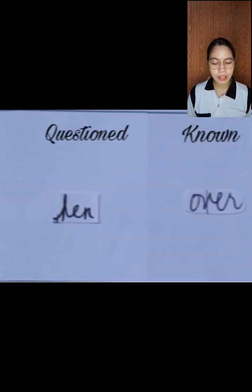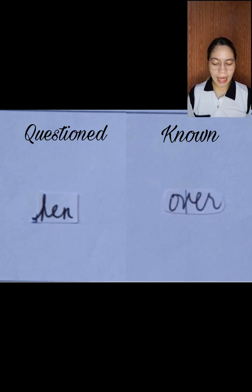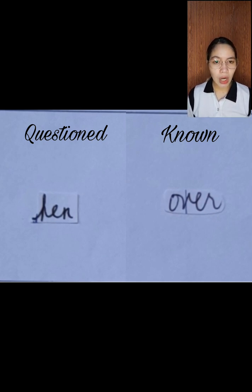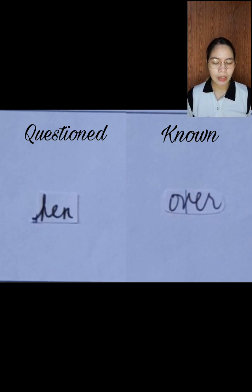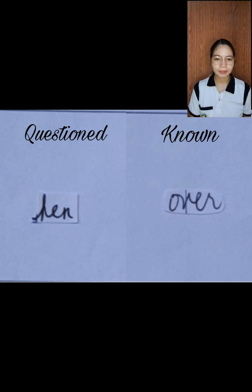Next, the second specimen: the questioned specimen is the word 'her' and the known specimen is the word 'overt.' Here you will see an eye loop or eyelet — a small loop formed by strokes that extend in divergent directions. You will also see a cursive type of letter E, and the connecting strokes that link the letter E to the other letters.